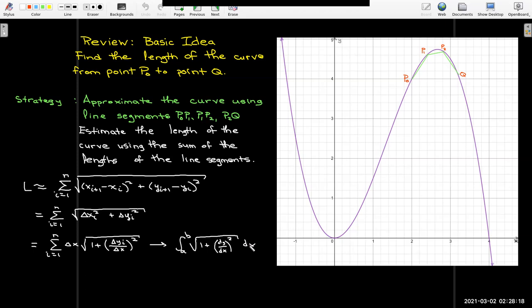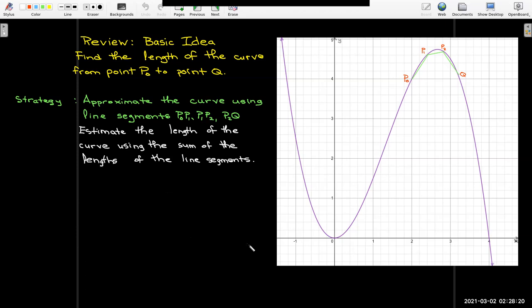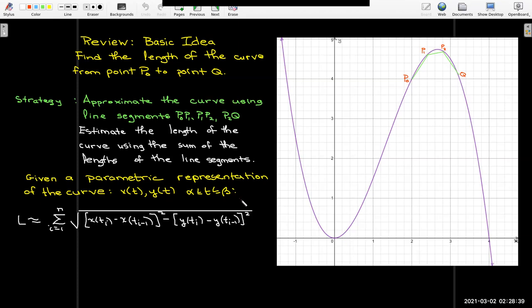Now also in Calculus 2, we might have looked at a parametric representation of a curve. So we're given two functions, x and y, which are both functions of a parameter t, and t goes between alpha and beta. And so in this case, our delta x would just be the difference between x evaluated at t sub i and x evaluated at t sub i minus 1, and a similar expression for the delta y.